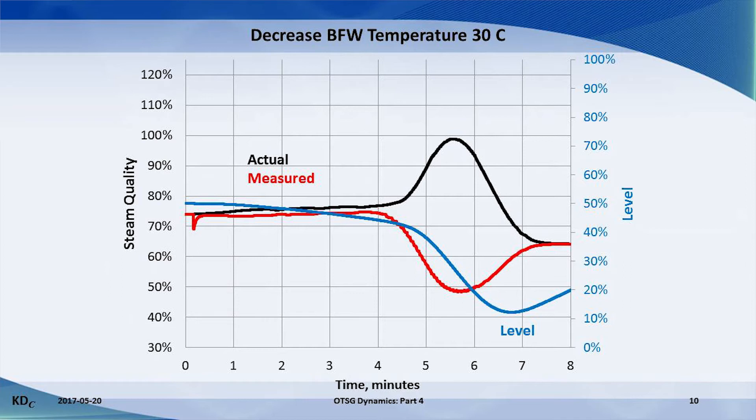This low pressure drop is interpreted as a low steam quality. The level in the separator again tells us what is really happening. The level plummets when the cold front reaches the boiling location and the radiant section starts to boil dry. Then the level gradually rises because the OTSG is delivering more water.